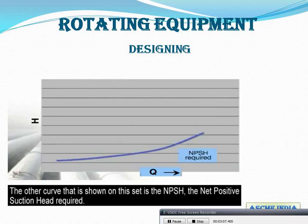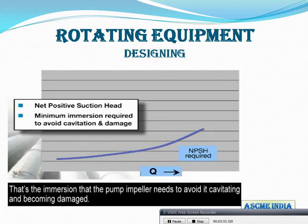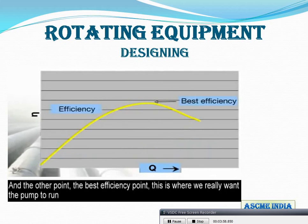Another important parameter is the NPSH — Net Positive Suction Head. This is shown in the curve as well. NPSH represents the net positive suction head required — the minimum submersion or inlet pressure required to avoid cavitation and damage to the pump impeller.